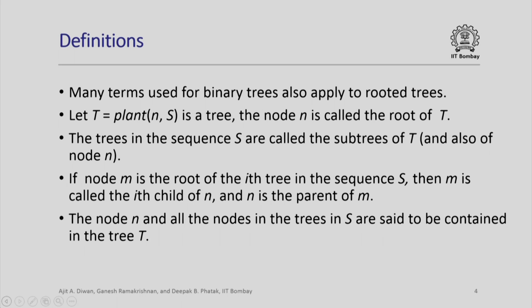Many terms used for binary trees also apply to rooted trees. If you have a tree plant(n, s), the node n is called the root of the tree. The trees in the sequence s are called the subtrees of t and also of the node n. A node can have any number of subtrees because s is a sequence that can contain any number of elements, each of which is a rooted tree. If node n is the root of the ith tree in the sequence s, then n is called the ith child of n, and n is the parent of that child — unlike binary trees which have only a left child and right child, a rooted tree node can have a 0th child, first child, second child, and so on.